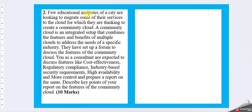Question 2: A few educational institutes of a city are looking to migrate some of their services to the cloud, for which they are thinking to create a community cloud. A community cloud is an integrated setup that combines the features and benefits of multiple clouds to address the needs of a specific industry. They have set up a forum to discuss features of the community cloud. You, as a consultant, are expected to discuss features like cost effectiveness, regulatory compliance, industry-based security requirements, high availability, and more control, and prepare a project on the same. Describe the key points of your report on the features of a community cloud.